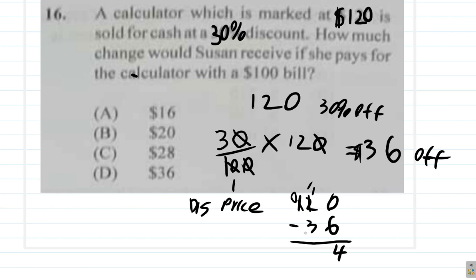11 minus 3 is 8. So the discount price is $84.